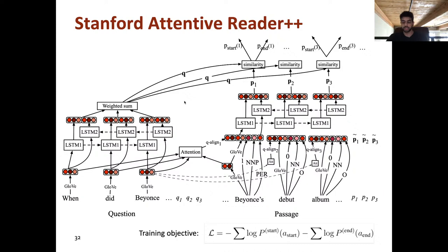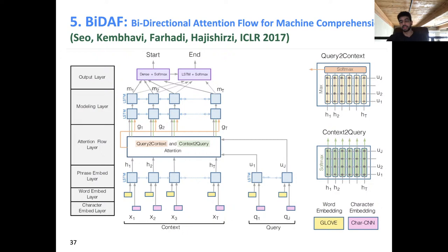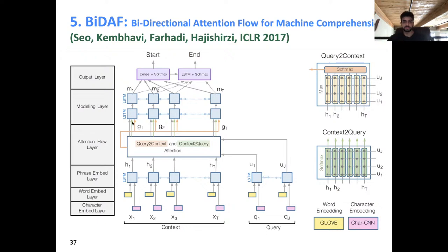Another commonly used model was BiDAF, which focuses on adding as much attention as possible between the question and paragraph. It uses two types of attention: the query representation augments the context word embeddings, and the paragraph vectors are used to get a more contextualized query representation. This is passed through several recurrent layers and finally start/end span prediction is done at every token — same concept, just with more complex attention mechanisms below the classifiers.